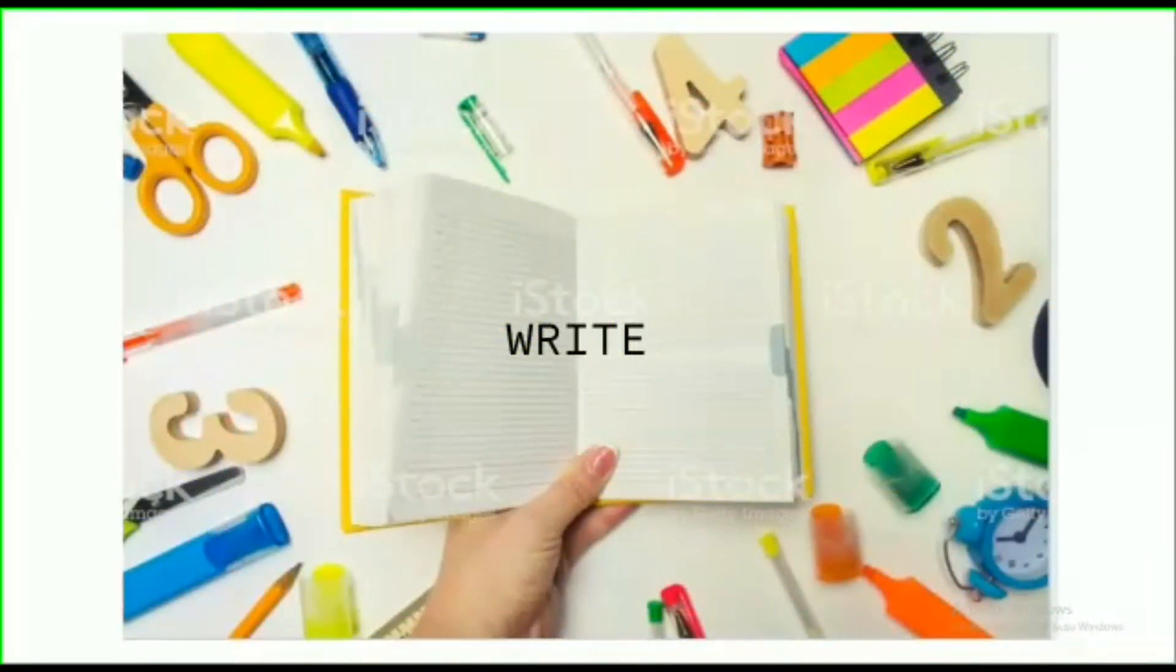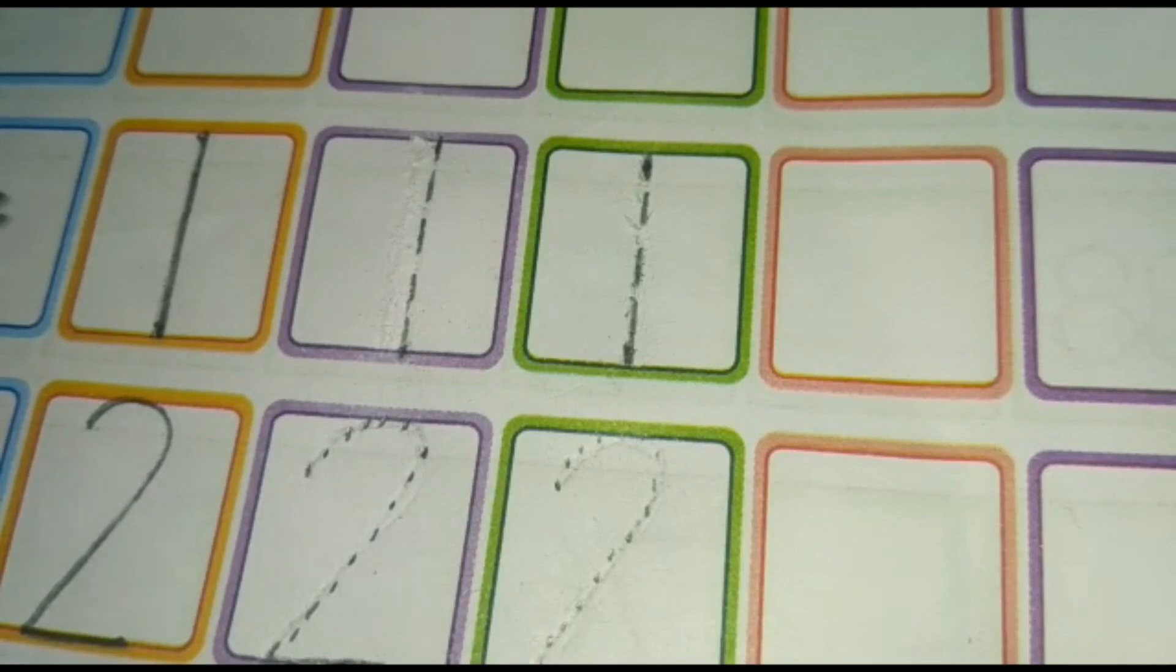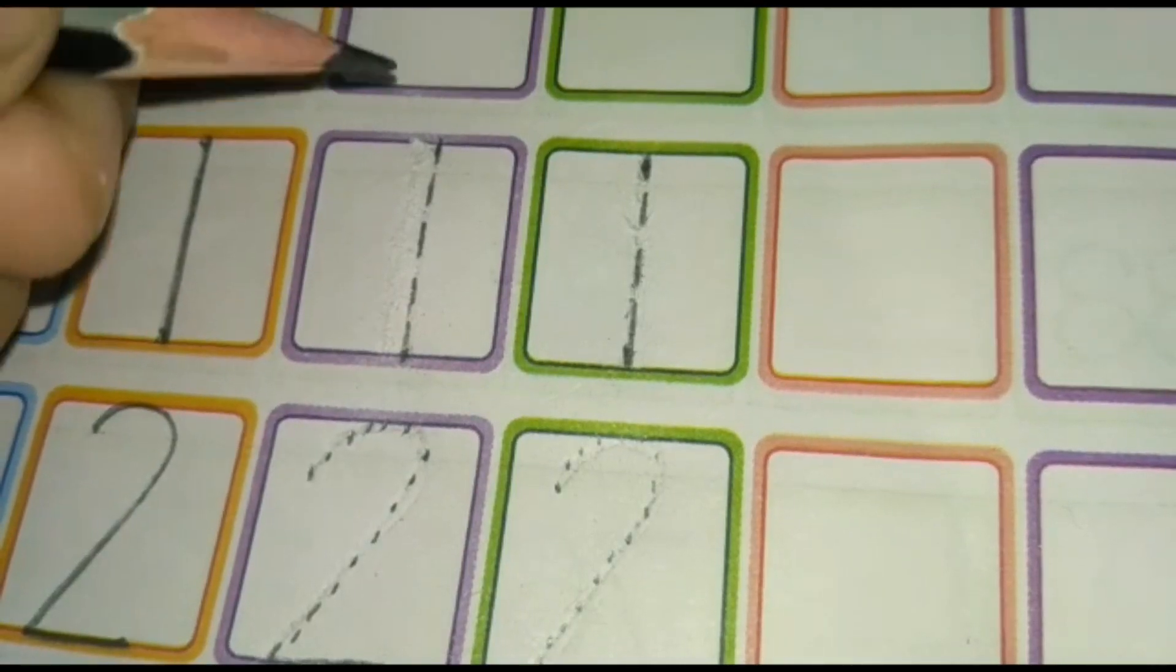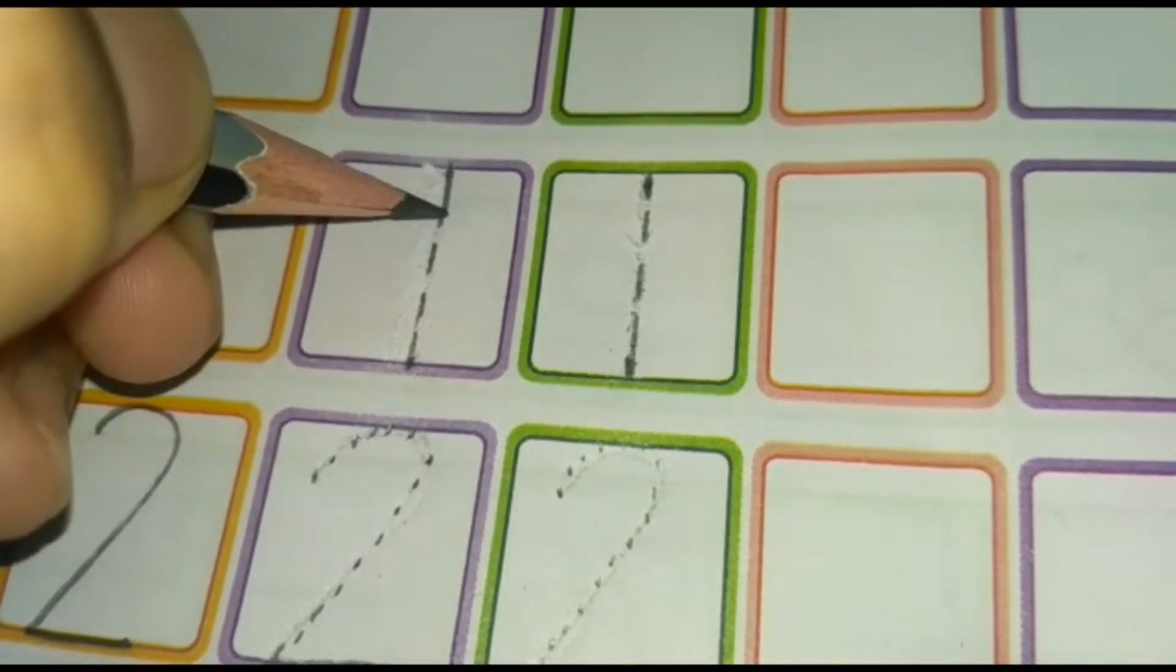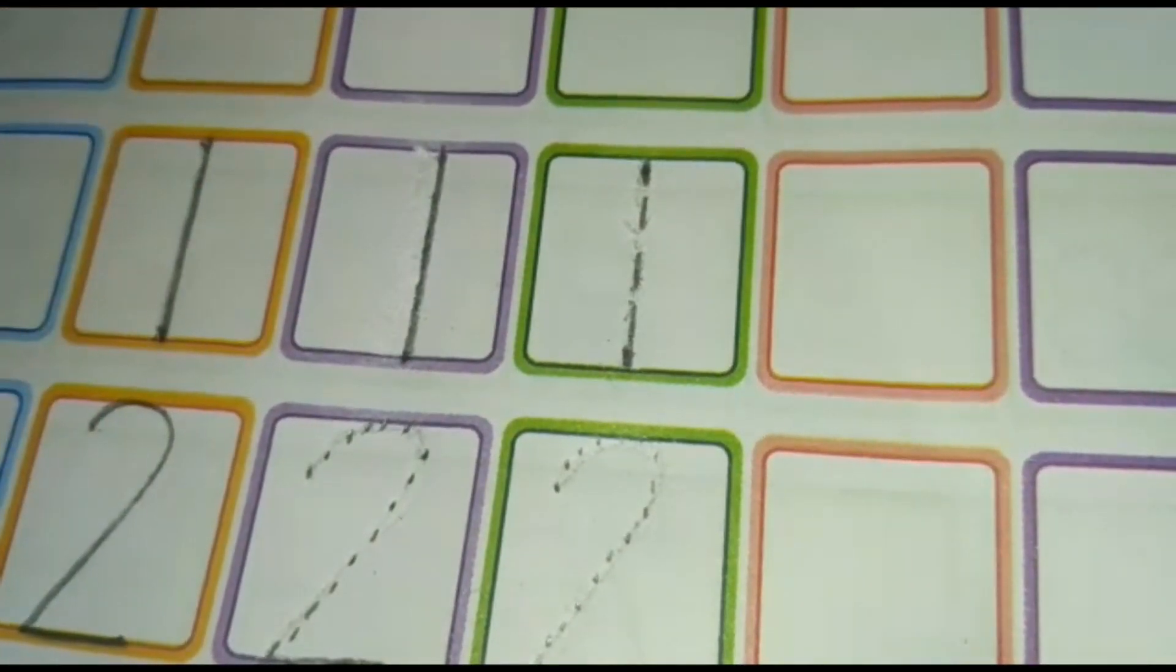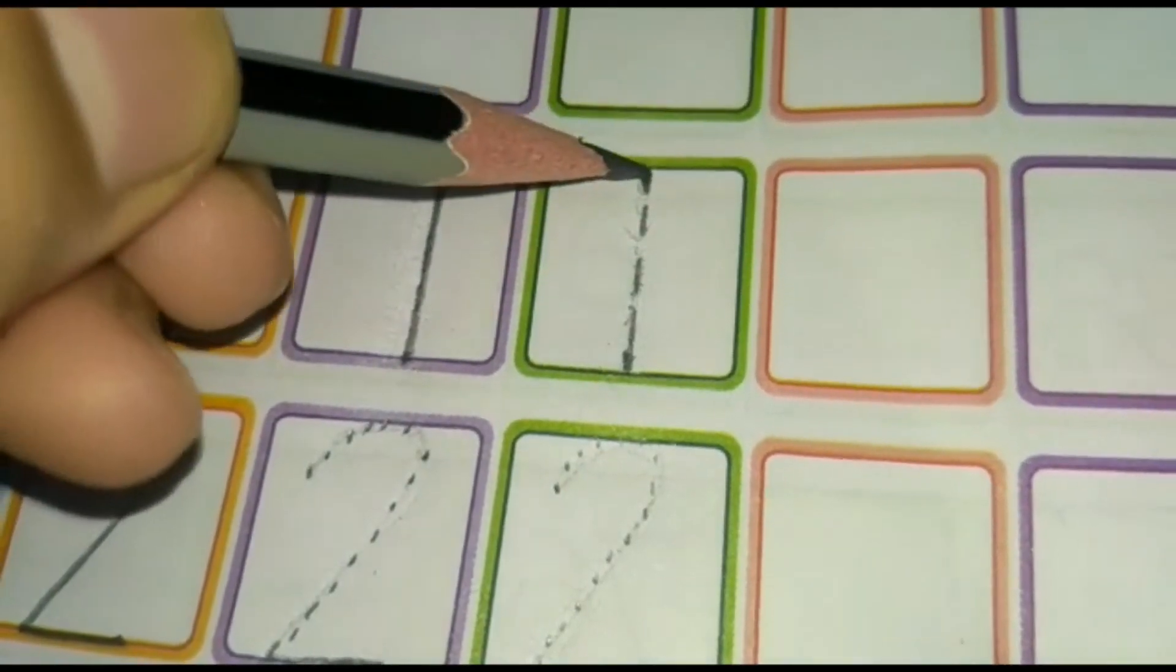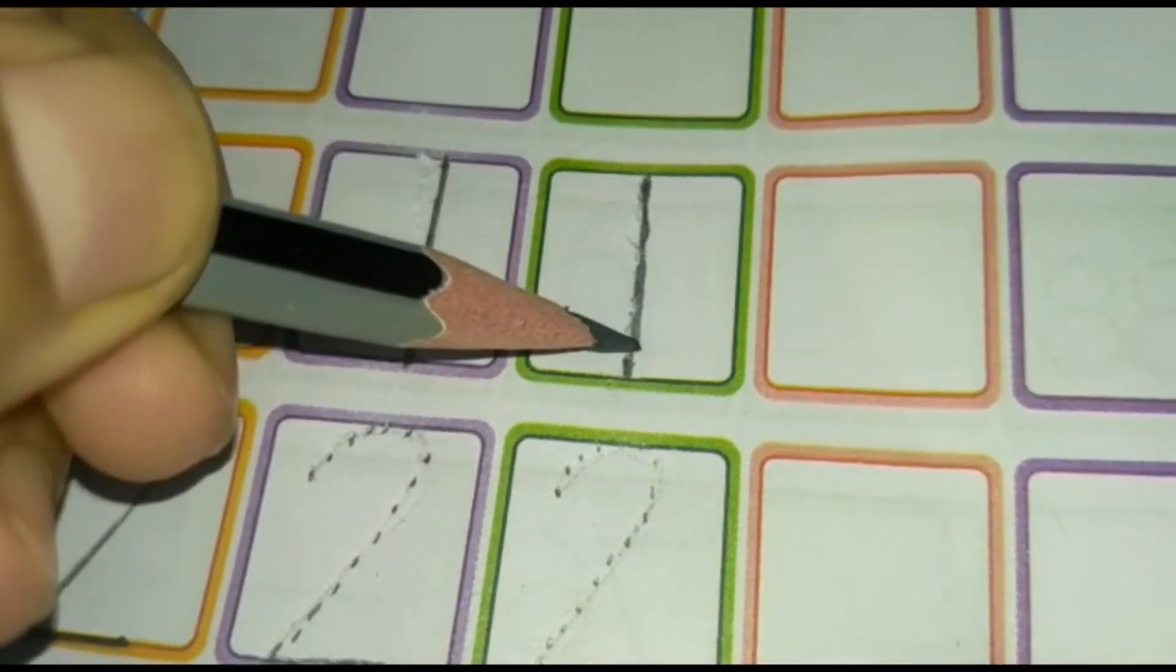Kids, you have seen the numbers? Now, I am going to teach you how to write them. We will start with number 1. You have to join the dots starting from the top to the bottom. And yes, this is number 1. A standing line and done.